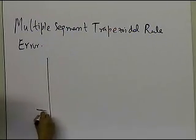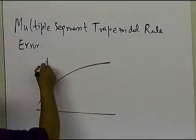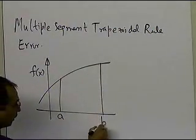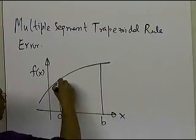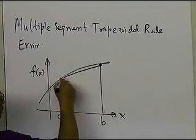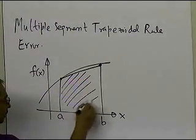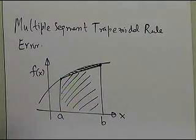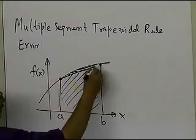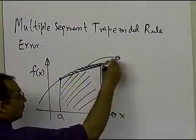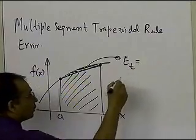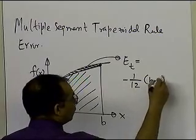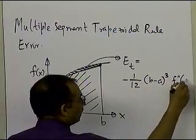Now, if you look at a single segment trapezoidal rule, suppose I am trying to integrate this function from a to b, where this is a and where this is b, then the trapezoidal rule is going to give me the area under this curve, which is a straight line. So there's some amount of true error which has been created because of the approximation of the curve being a straight line from point A to point B. This particular true error, without proof, is given by minus 1 divided by 12, times b minus a whole cube, times f double prime of alpha.